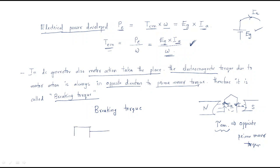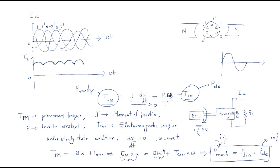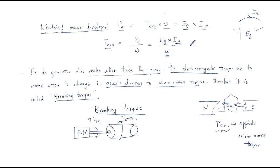Generally we have a prime mover that generates the prime mover torque, and in the DC generator itself an electromagnetic torque is generated in the opposite direction. This electromagnetic torque is called the braking torque. So this is about the relation between the electromagnetic torque and the generated electrical power, and this torque is called the braking torque. I hope all of you understand this session. Thank you.